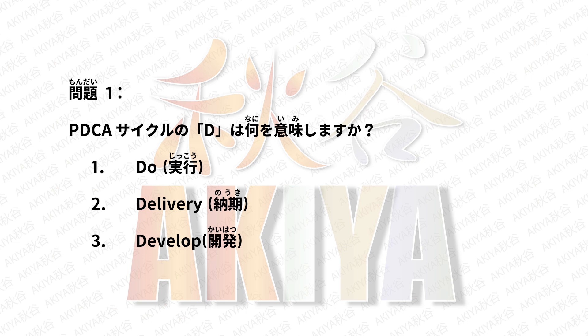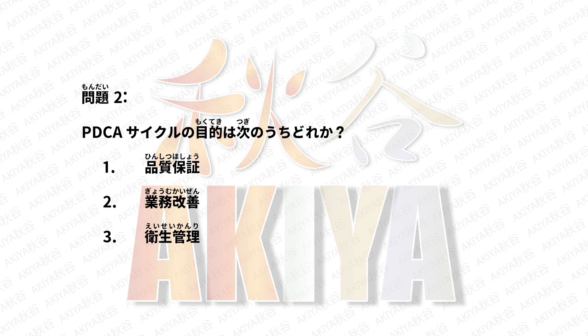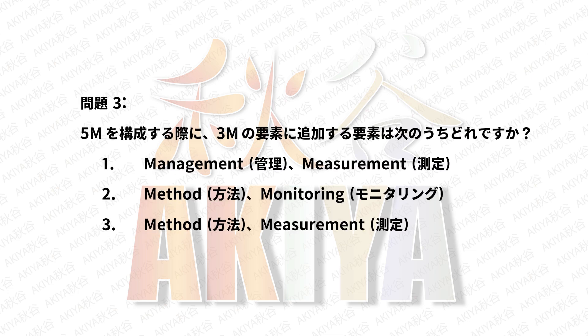問題1の選択肢: 2. Delivery（納期）、3. Develop（開発）。正解は1番です。問題2: PDCAサイクルの目的は、次のうちどれか。1. 品質保証。2. 業務改善。3. 衛生管理。正解は2番です。